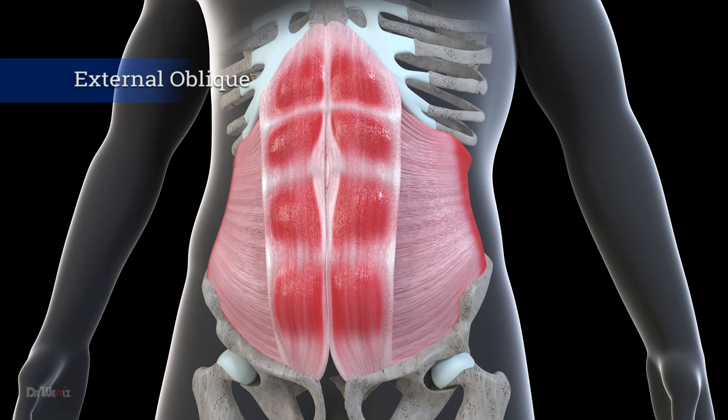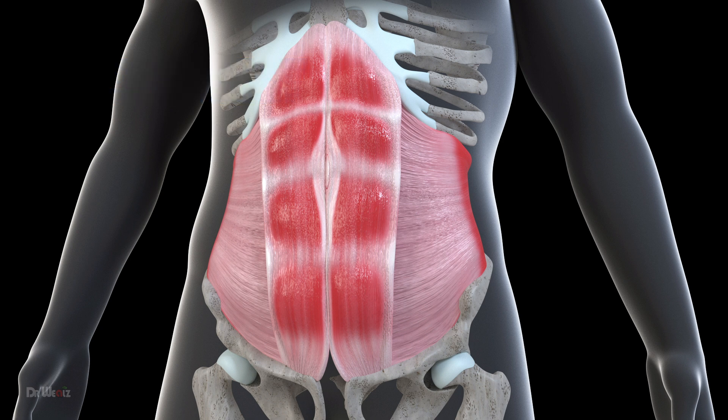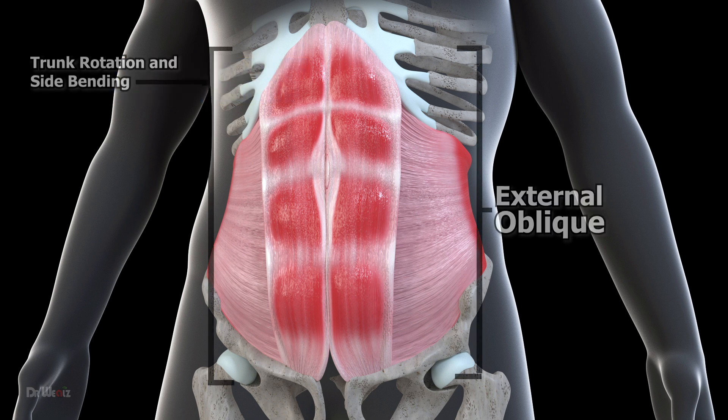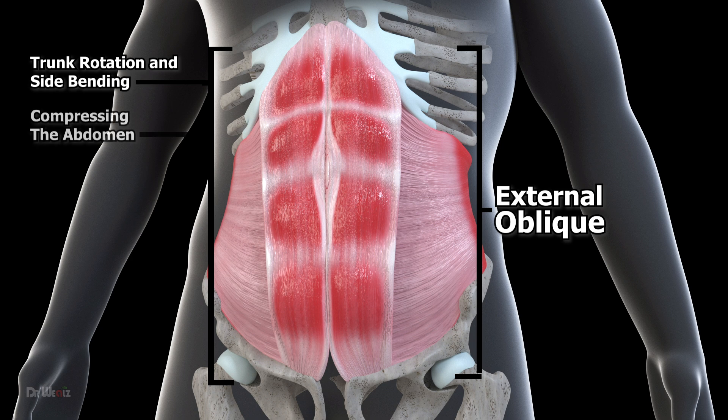Next up is the external oblique, which runs diagonally from the lower ribs to the iliac crest of the pelvis. This muscle is responsible for rotating and side-bending the trunk.